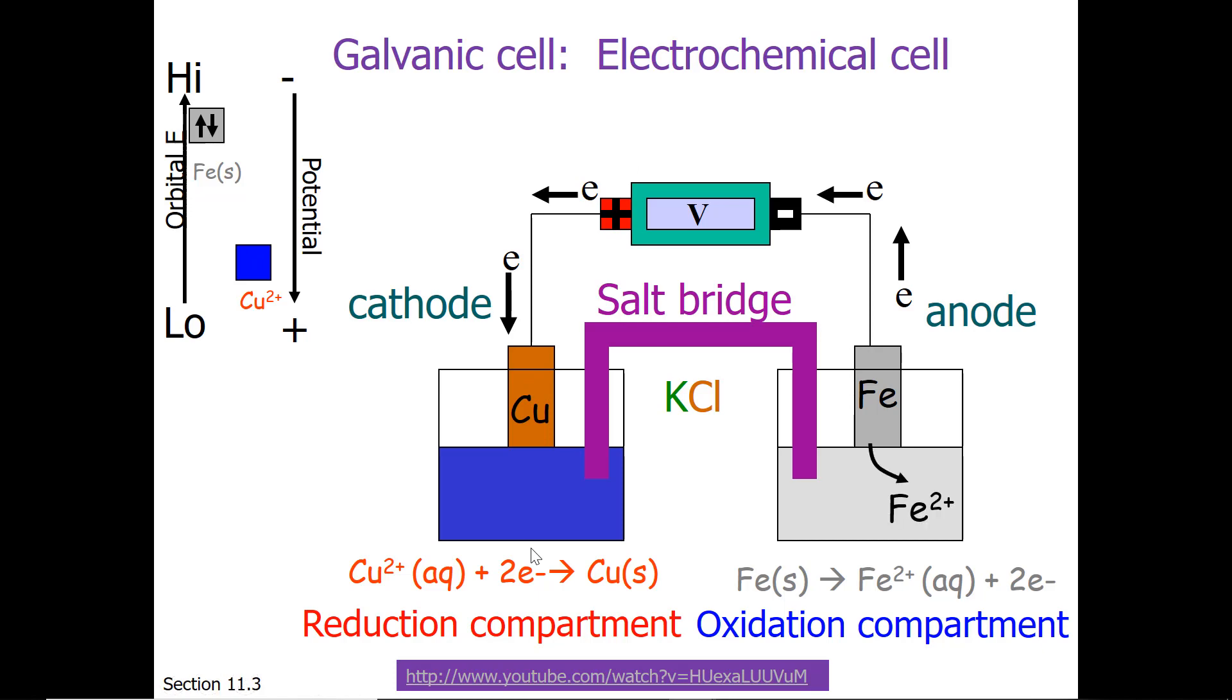While the reaction is occurring, the iron is turning to iron 2+, so we need to balance the ionic concentration by a species from the salt bridge. So the salt bridge is full of potassium chloride, and the chloride portion migrates toward the anode. Hopefully that's easy to remember. The anion migrates toward the anode.